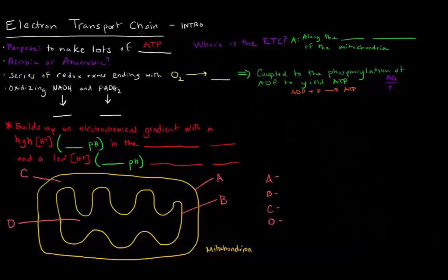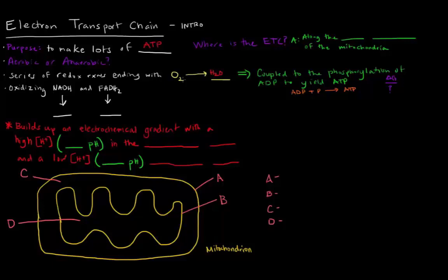The electron transport chain is a series of redox reactions ending with taking oxygen and actually turning it into water. So if we're taking oxygen to water, we're adding some hydrogens, lowering the number of bonds to oxygen — we're actually reducing oxygen to water. And because the series of redox reactions ends with oxygen being turned into water, this is considered an aerobic process, because oxygen is actually required in this chain of redox reactions.